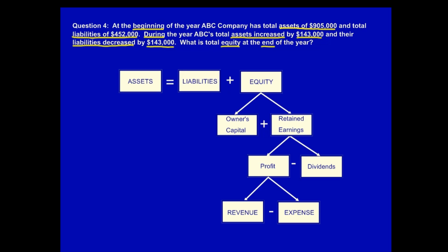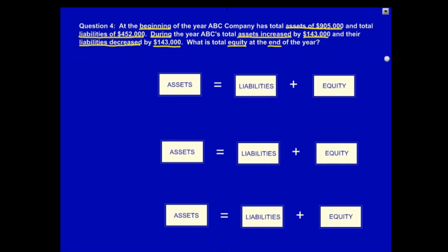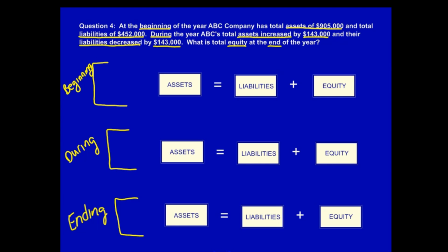However, we don't need information about owner's capital, retained earnings, profit, dividends, revenue, or expenses. What we need is three basic accounting equations. By reviewing the question we're able to figure out exactly what we need to solve it. Here are the three equations representing three different periods of time — exactly what we need. Note that the equations are mathematical equations and as such they always have to balance. Now, let's fill in what we know and then solve for what we don't know.